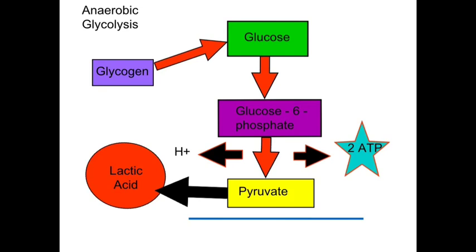The excess hydrogen ions cannot remain unattached and so combine with the pyruvate to form lactate, or lactic acid. The lactate anaerobic energy system does not resynthesize ATP as rapidly as the ATP-PC system because there are more chemical processes involved, but it is still very quick and can enable the body to engage in maximal or high-intensity work for a period of time. It is much quicker than the aerobic energy system. The drawback is the production of lactic acid and its accumulation in the muscle cells and the blood.